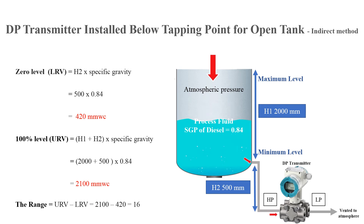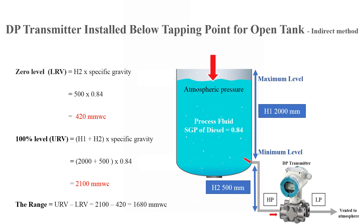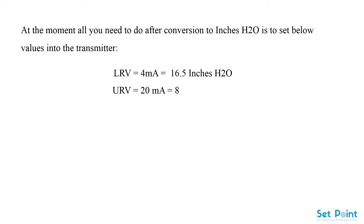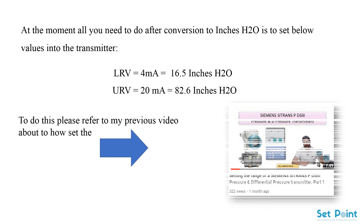The range equals upper range value minus lower range value, which equals 1680 millimeters water column. After conversion to inches H2O, set the following values into the transmitter: lower range value at 4 milliamps equals 16.5 inches H2O, and upper range value at 20 milliamps equals 82.6 inches H2O.